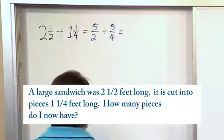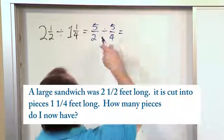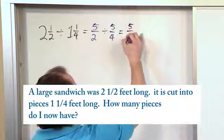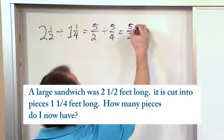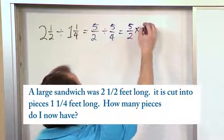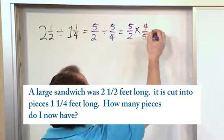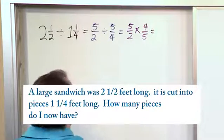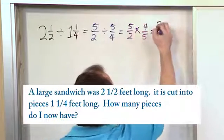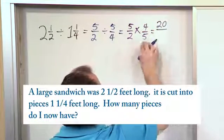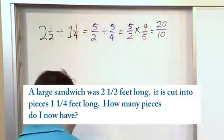Now you change division to multiplication. So you have 5/2 times—you flip this over—4/5, which is how we've been doing all of our problems. Finally, you can do the calculation. Five times four is twenty, and two times five is ten. So the answer is 20/10.